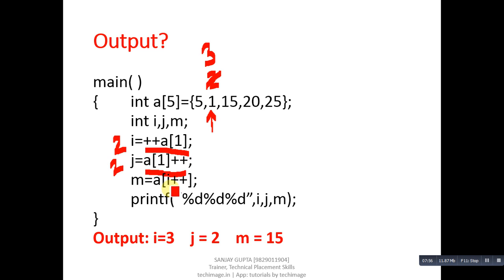Then a[i++]. Value of i is 2, so first a[2] location will be assigned into m. Value of a[2] is 15, so m receives 15. Then i++ will take place, so value of i will be 3. You can see the output: i is 3, j is 2, and m is 15.